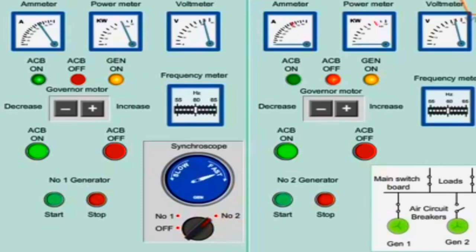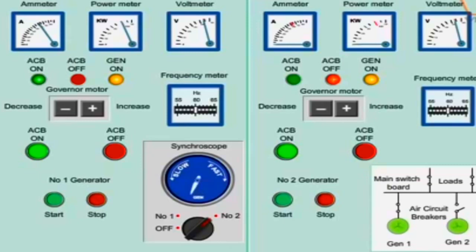If the needle rotates in a clockwise direction, the speed of the incoming generator should be decreased. If the needle rotates in an anti-clockwise direction, the speed of the incoming generator should be increased. The air circuit breaker should be closed when the incoming machine voltage is in phase with the bus bar voltage. It is advisable to close the breaker when the pointer rotates in the clockwise direction.